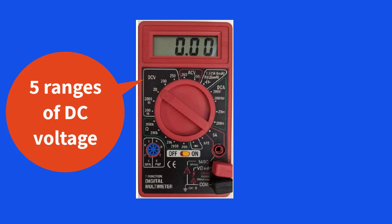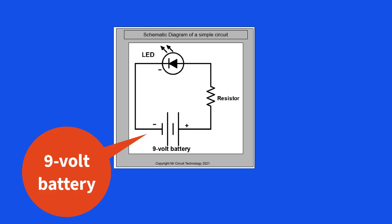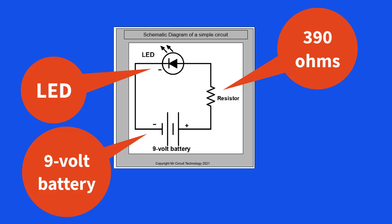First, we're going to build a simple series circuit on the solderless circuit board, consisting of a 9-volt battery, an LED, and a resistor of 390 ohms.